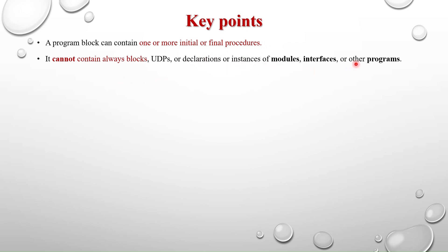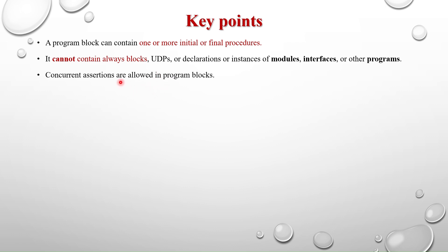Concurrent assertions are allowed in the program block. The execution is the same as in a module: sampling happens in the pre-point region, evaluation in the observed region, and the pass or fail statement in the reactive region — everything is the same as in a module.